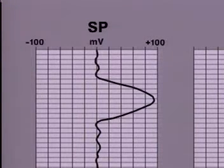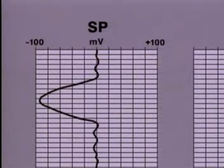In the case of a freshwater mud and saline formation waters, the potential observed opposite, say a permeable sandstone bed, is negative compared to the potential opposite shale. Thus, the SP curve will deflect to the left.